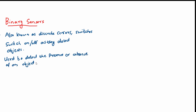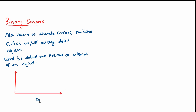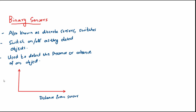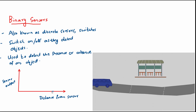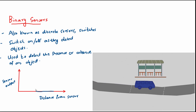If we draw a graph between the sensor output and the distance of an object from the sensor, we can see the sensor output switches to a higher value whenever it detects an object. This is illustrated here in this example where the sensor detects the presence of a bus when it reaches the